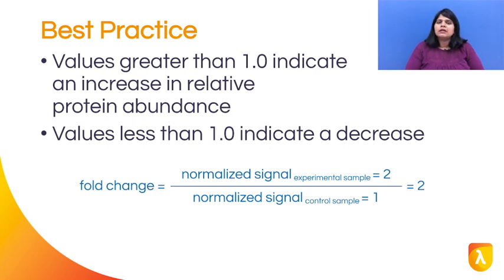For example, say the experimental value is 2.5 and control value is 10. The fold change would be 0.25. The reciprocal value of 0.25 would be represented as a 4-fold decrease.